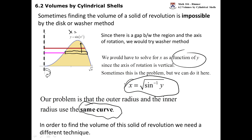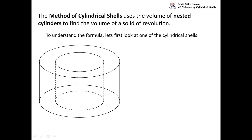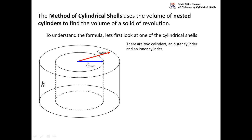So we need a different technique — the cylindrical shells method. We're going to take a series of nested cylinders to find the volume. Here's one cylinder: it's a shell where an inner center cylinder has been removed, giving a cylindrical shell shape with a height. There's an outer cylinder and an inner cylinder, each with a radius: r_inner and r_outer, and they have the same height.